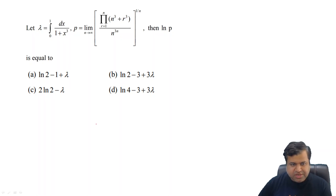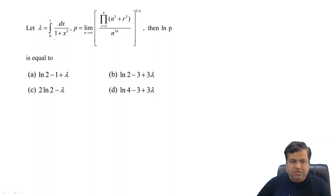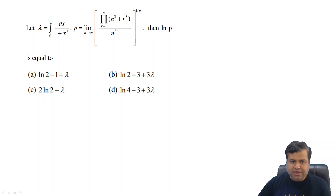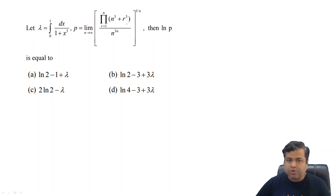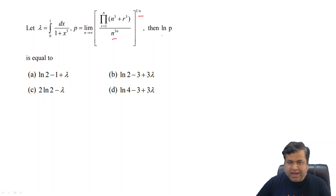This is a question of typical ISI level. Let lambda equal the integral from 0 to 1 of dx upon 1 plus x squared. And let p be the value of the limit as n tends to infinity of the product where r varies from 1 to n of (n² + r³) all upon n to the power 3n, whole raised to 1 by n. Then, find ln p.